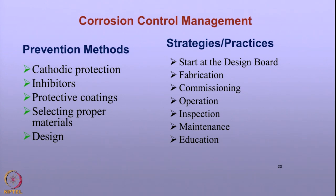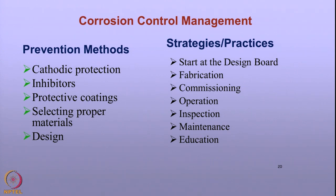The strategy should also involve fabrication — whether to go for a flange joint or welding. You should take care during commissioning; there are cases where inadequate care during commissioning led to corrosion. During operation, environments and structural stresses are operating and corrosion can really occur. Inspection and maintenance are integral parts of corrosion control in industries. Above all, it is very important to educate the personnel because corrosion is not part of the normal curriculum for many engineering courses, so it is very important to educate people in corrosion control as well as the management.